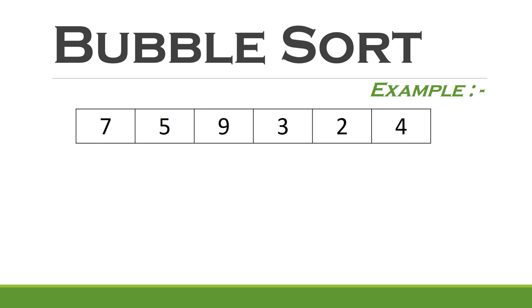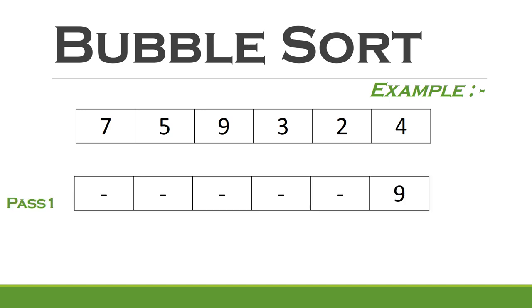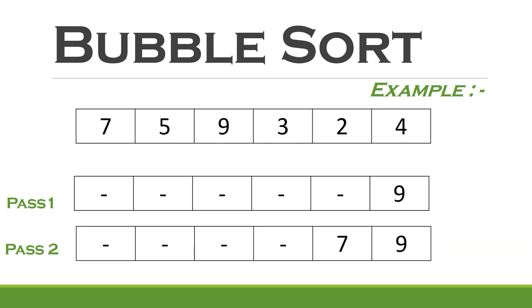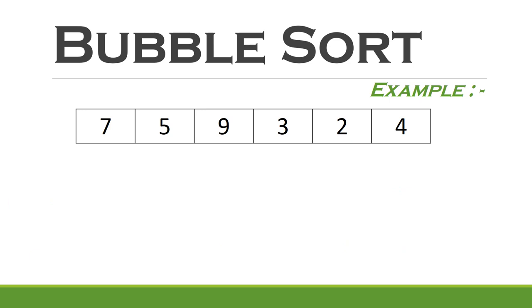So after the first pass, 9 will be moved to the end. And similarly after the second pass, 7 will be moved. Each pass contains multiple comparison operations of adjacent elements.